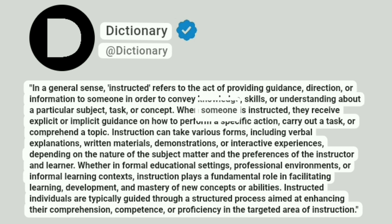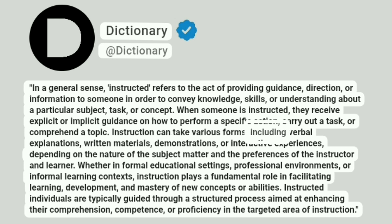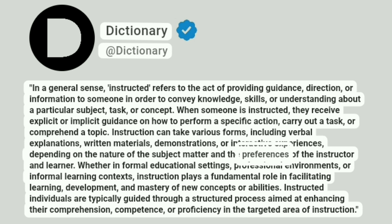When someone is instructed, they receive explicit or implicit guidance on how to perform a specific action, carry out a task, or comprehend a topic. Instruction can take various forms, including verbal explanations, written materials, demonstrations, or interactive experiences, depending on the nature of the subject matter and the preferences of the instructor and learner.